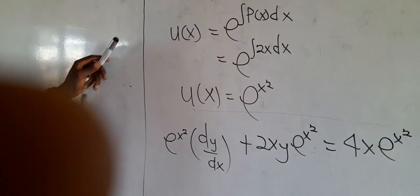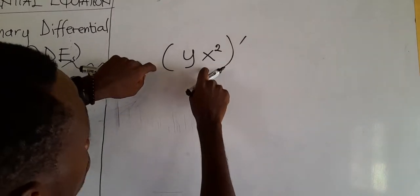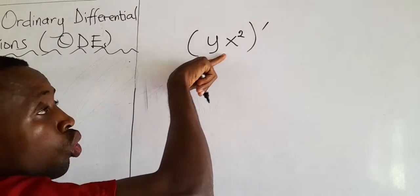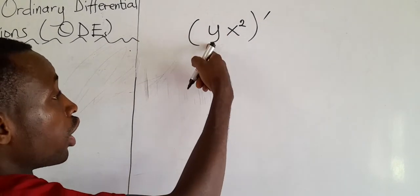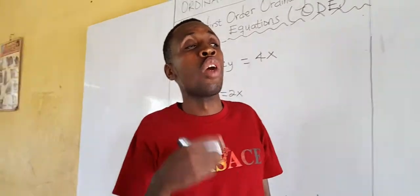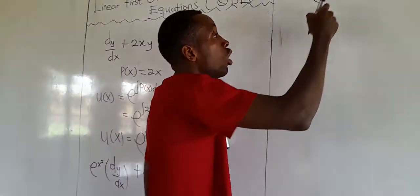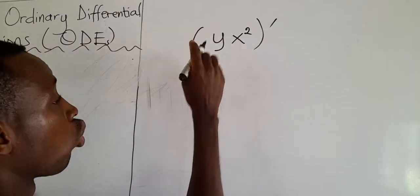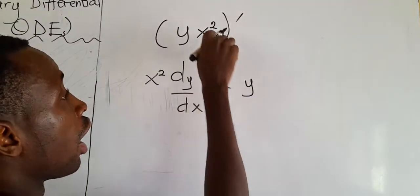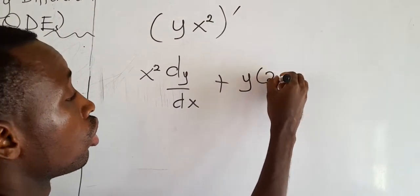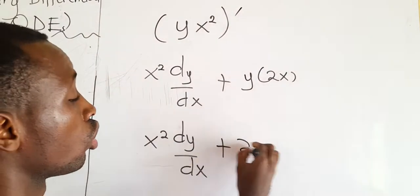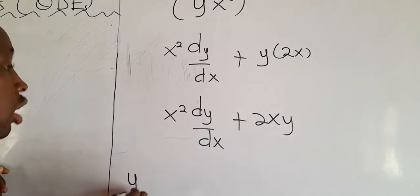I will show you what happens. If I ask you to differentiate y·x² — where y is a dependent variable — we use the product rule. Keep x² and differentiate y to get dy/dx, plus keep y and differentiate x² to get 2x. So the differential of y·x² is x²·(dy/dx) + 2xy.